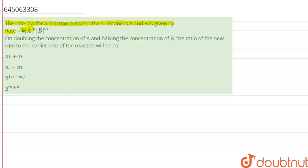times the concentration of A raised to power N times the concentration of B raised to power M. On doubling the concentration of A and halving the concentration of B, the ratio of the new rate to the earlier rate will be...